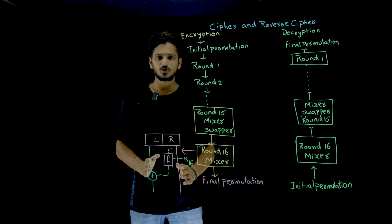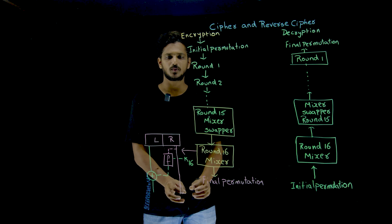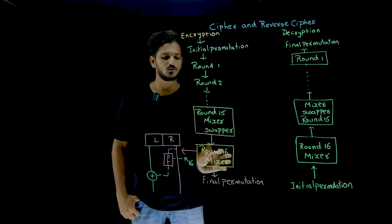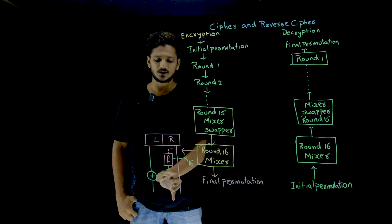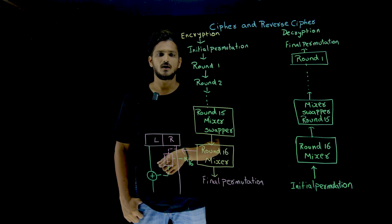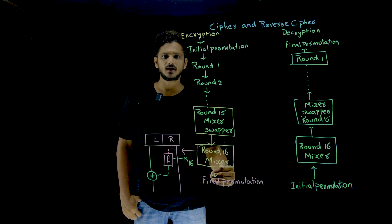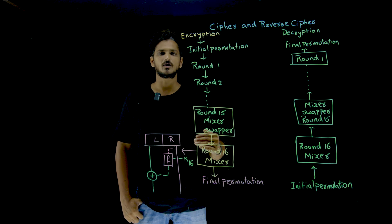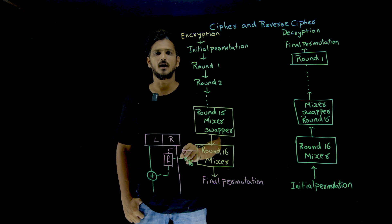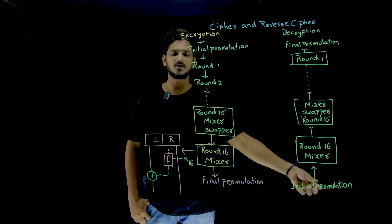The swapper is going to swap the right side to the left hand side and the left hand side to the right hand side — that is what the swapper does. In round 16, they are going to eliminate this swapping. After coming out of round 16, the final permutation will be done and the cipher text will come out of the encryption. The cipher text then moves to the destination.